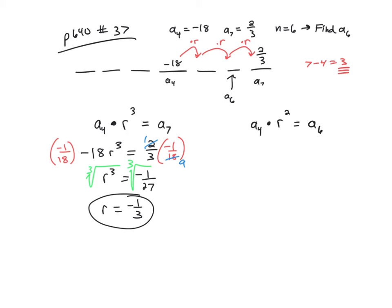Because look up here again, if I start with a sub 4, multiply by r, multiply by r, I should end up at a sub 6. So when I put those numbers in, a sub 4 is negative 18, r is negative 1 3rd, and I'm going to square that, and I'm supposed to get a sub 6. So a sub 6 is going to be 1 9th times negative 18, so a sub 6 would be negative 2.